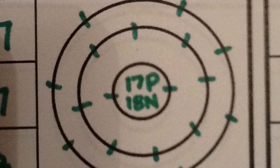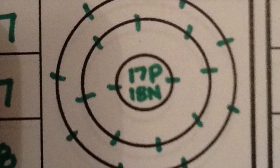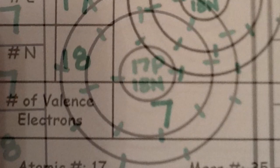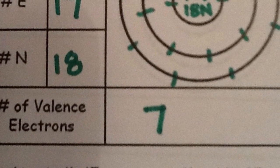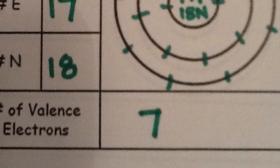So those last 7 electrons will go in the third energy level. Those outer energy level electrons are called valence electrons.